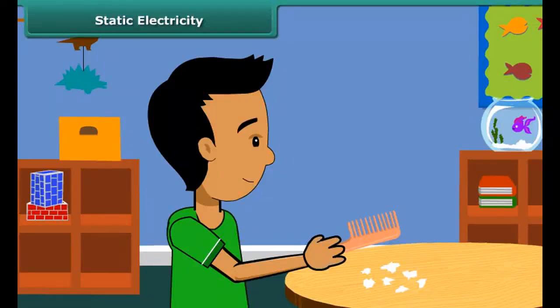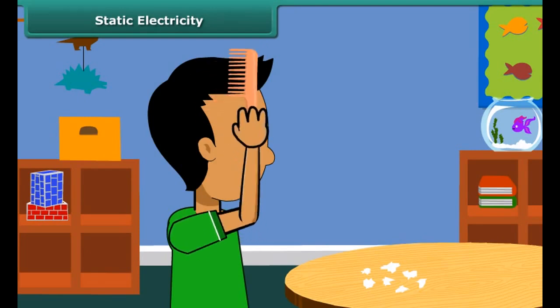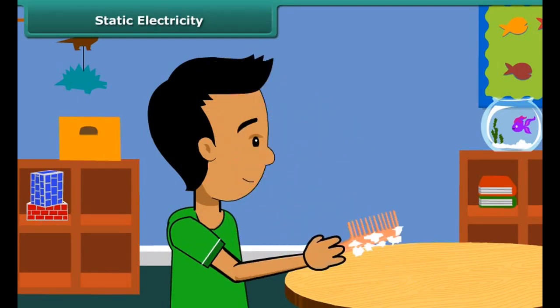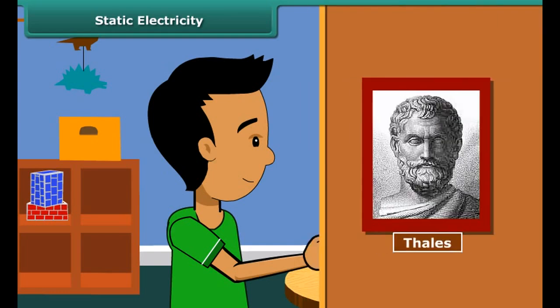When we comb our hair with a plastic comb and take it near small pieces of paper, the paper pieces are attracted toward the comb. We then say that the comb is charged with electricity. This was first noticed by a Greek man named Thales over 2500 years ago.